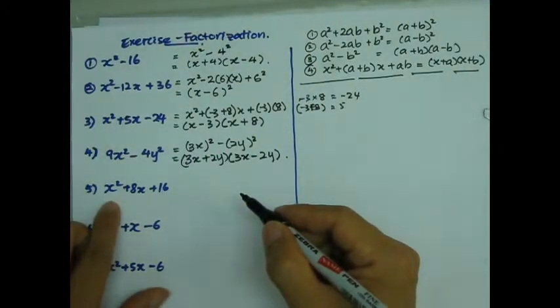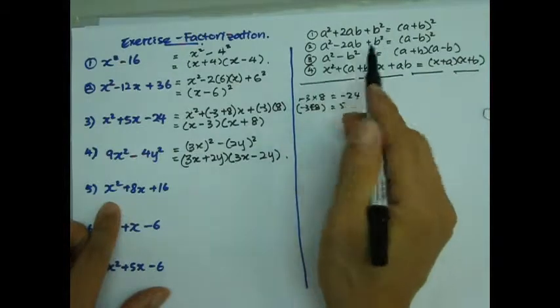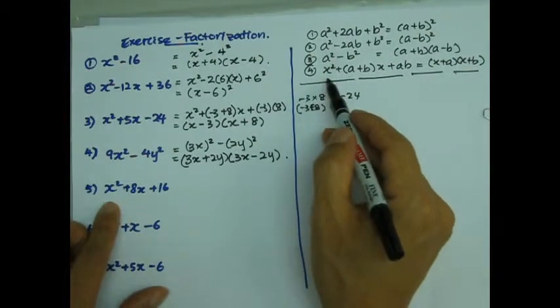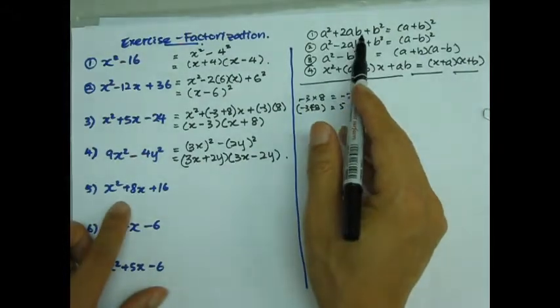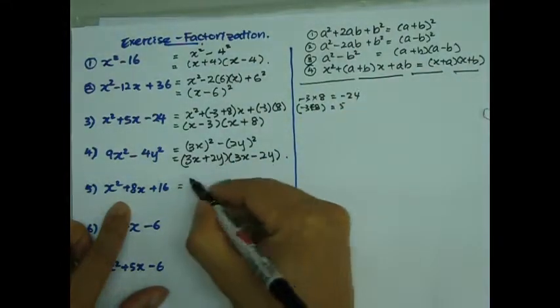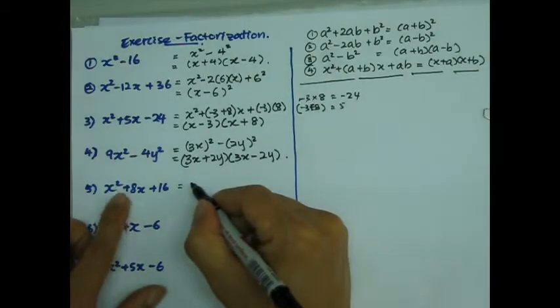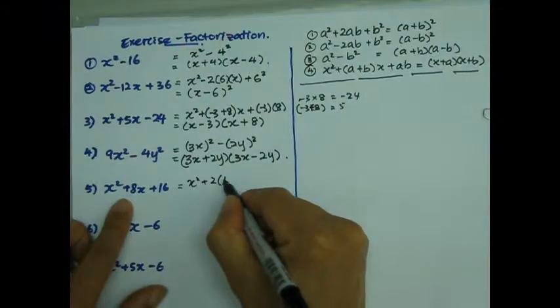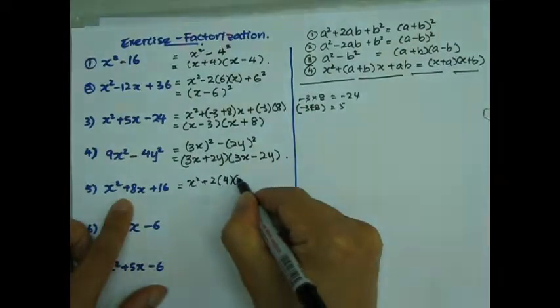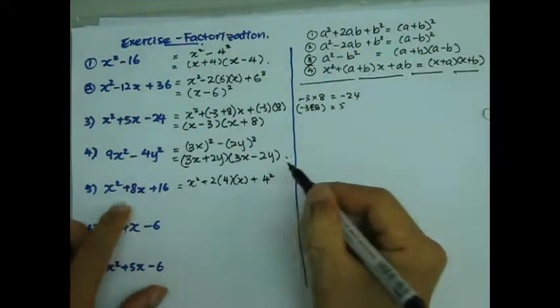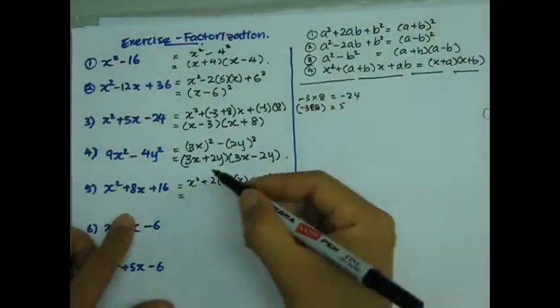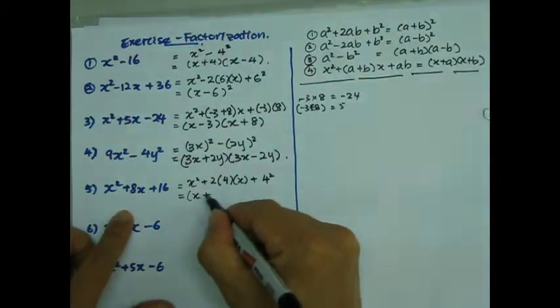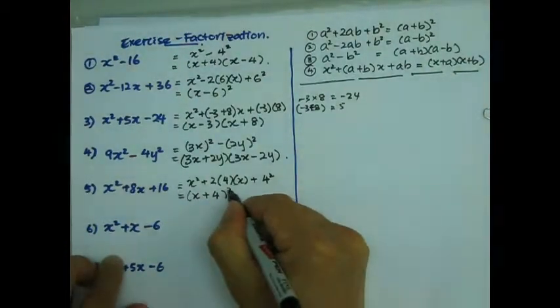Question number 5. That's not going to be form number 3. Very likely to be form number 1. So I'm going to try number 1. We've got to rewrite this as x squared plus 2, and then I have 4. And that's exactly form number 1. So this is going to be x plus 4 quantity squared.